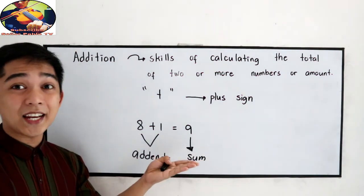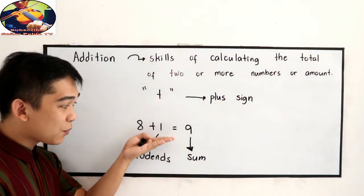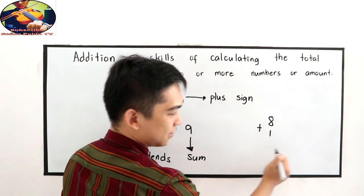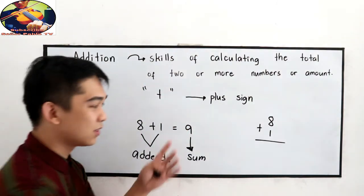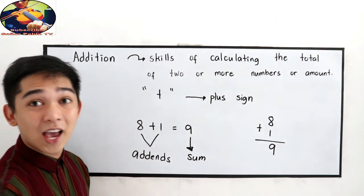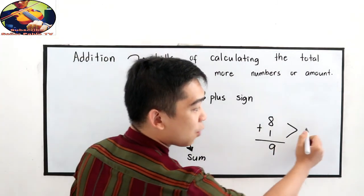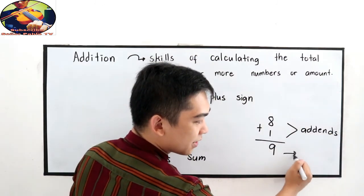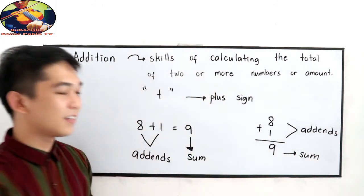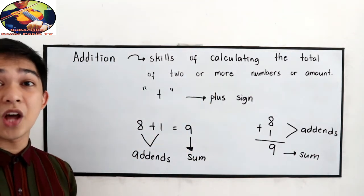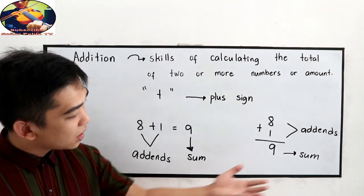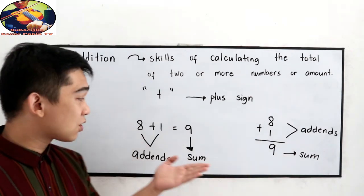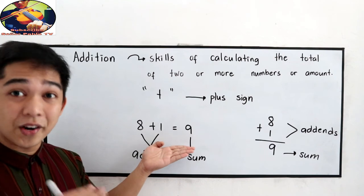We can also write it in vertical form. Let's say we have 8 plus 1 — I'm going to write it vertically. So 8 plus 1, and that is equal to 9. These will be our addends, and this is our sum. In solving large numbers, we prefer to use the vertical way. But if you can solve it mentally, it's okay to write it in horizontal way.